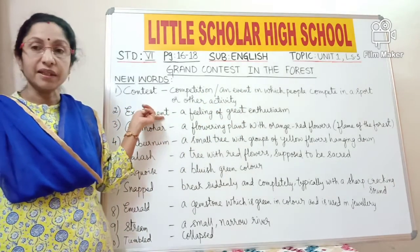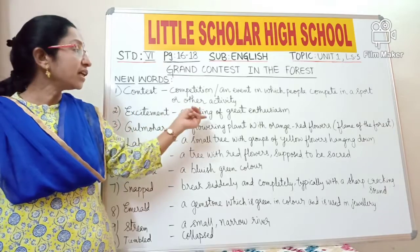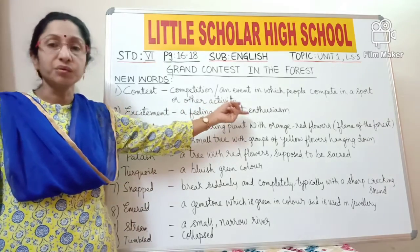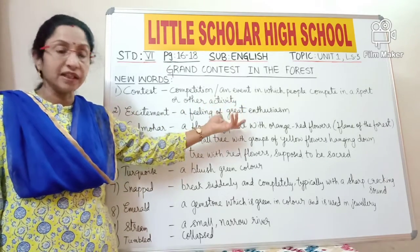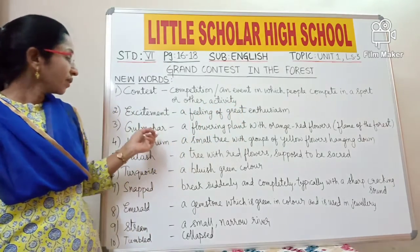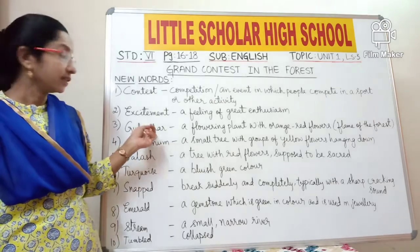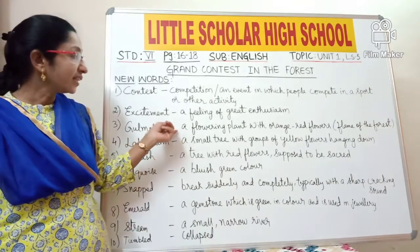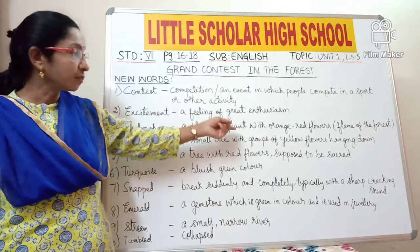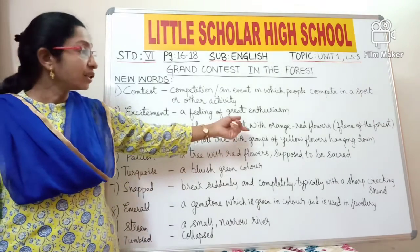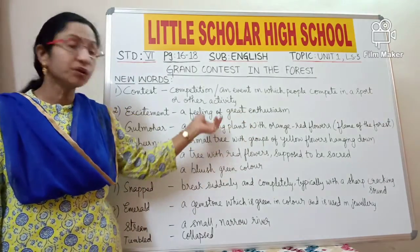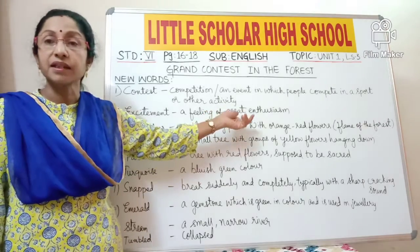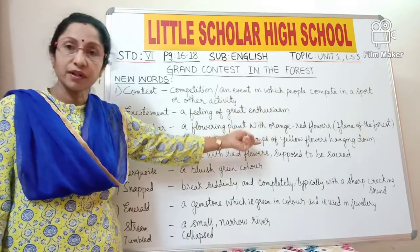Excitement — what is excitement? It is a feeling of great enthusiasm, a strong feeling. Gulmohar — it is a tree, a flowering plant with orange or red flowers which is usually called the flame of the forest.